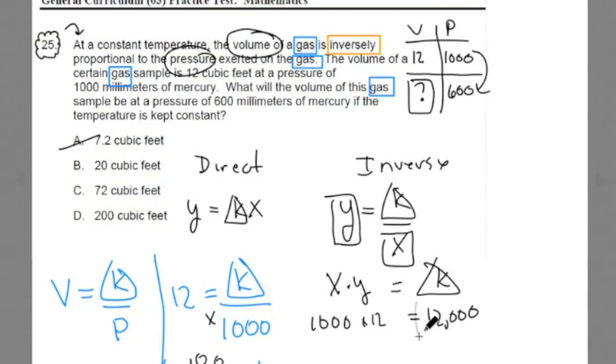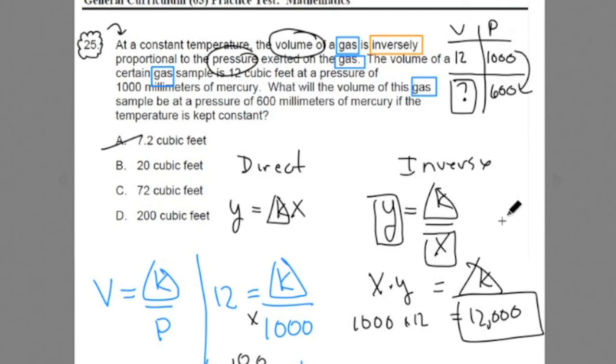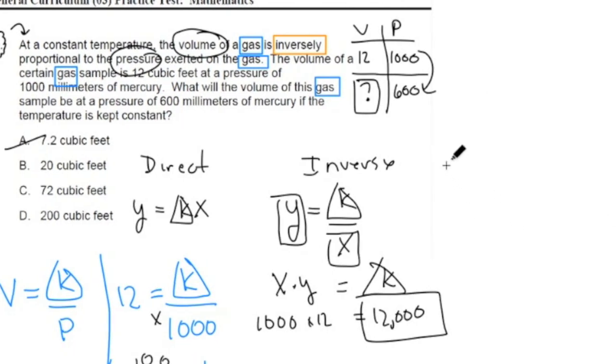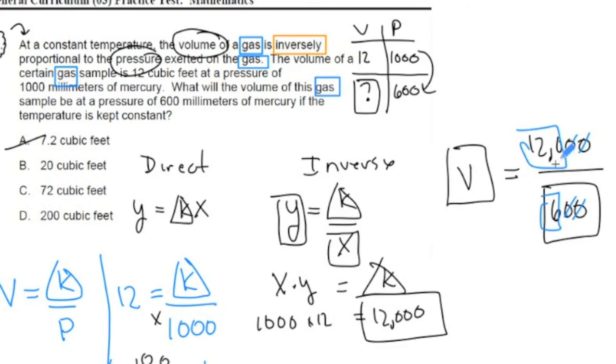Once we find out the constant of proportionality, we can substitute that back into our original equation. Volume is equal to our constant of proportionality, which is this number that we calculated, over pressure. And it's going to be pressure at 600. Well, now we can do some division by factors of 10. We get 1,200 divided by 6. 6 goes into 12 two times, so 6 will go into 120 20 times. We just found out that volume when air pressure is 600 is 20.